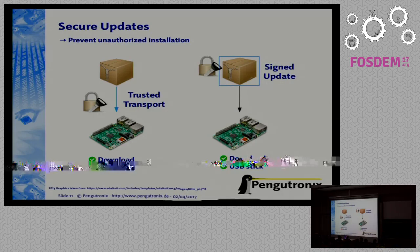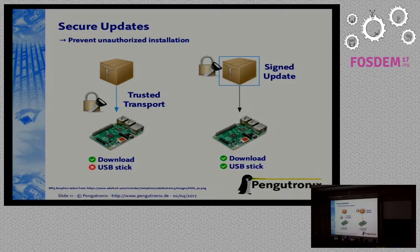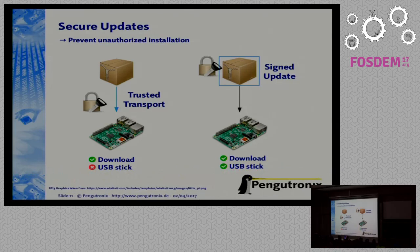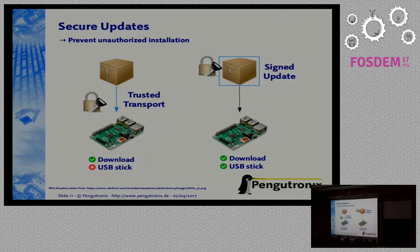You also want security — you don't want someone unauthorized to be able to update your system. There are two basic ways to achieve this. First, you can use a trusted transport like SSL or HTTPS. Then it doesn't matter as much whether you trust the update itself, since you know it comes from a trusted source. This works well for the download case but will fail in the USB stick case, since there's no easy mechanism to trust a USB stick. A more general approach is to put the trust in the update itself and sign the update, so you don't have to trust your connection — and this works both for downloading and for the USB stick case.